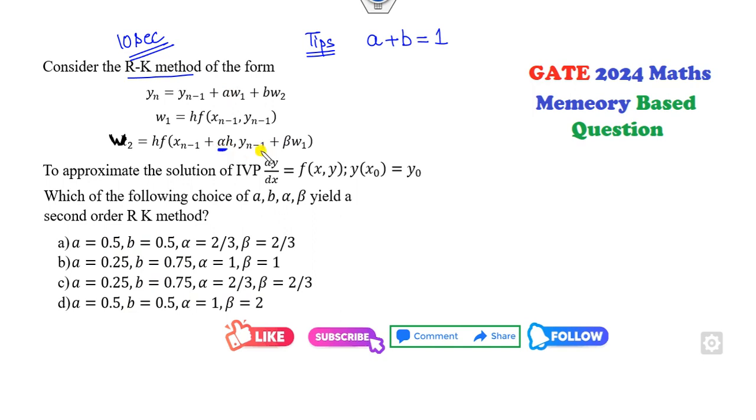Second tip as I gave you: Alpha and Beta should be same. So you can see which option is cancelled out. You can see D option will be cancelled out.